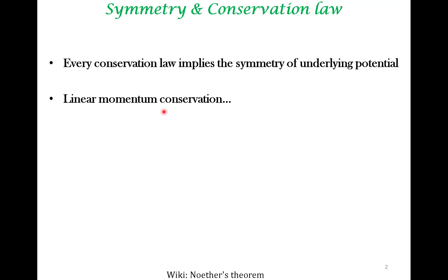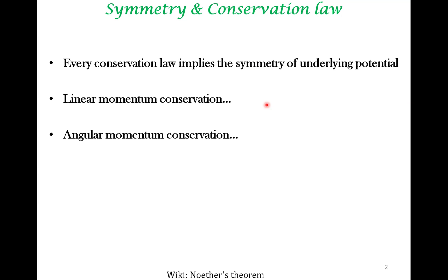Suppose linear momentum is conserved. This implies there is a symmetry in the underlying potential — in this case, when you translate the system linearly, the potential remains the same. So this implies there is an underlying linear translation symmetry in the potential. If you consider angular momentum, then there is a symmetry in the angular potential — it can have circular or spherical symmetry. All these things give rise to angular momentum conservation. For every conservation law, there is a symmetry of the underlying potential.